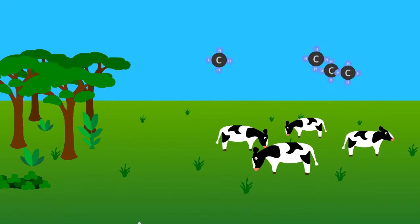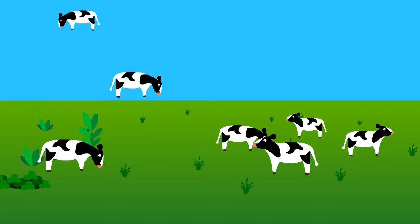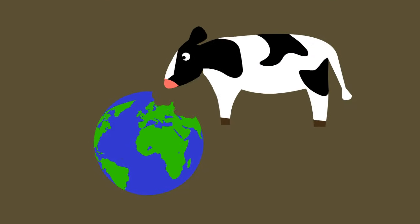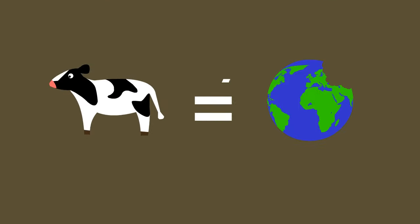From the release of methane to clearing forests for pasture land, cattle raising is known for being very environmentally destructive. But this is not inherent to grazing animals.